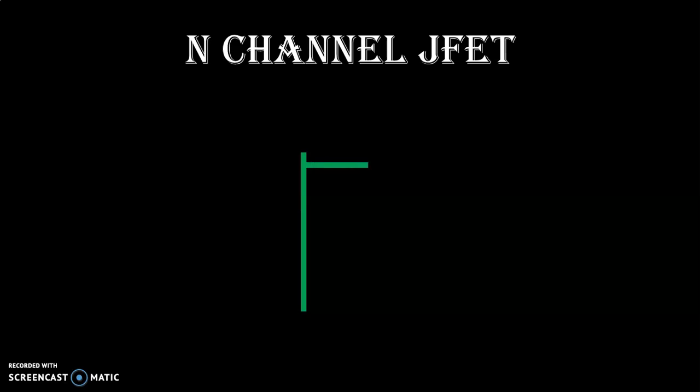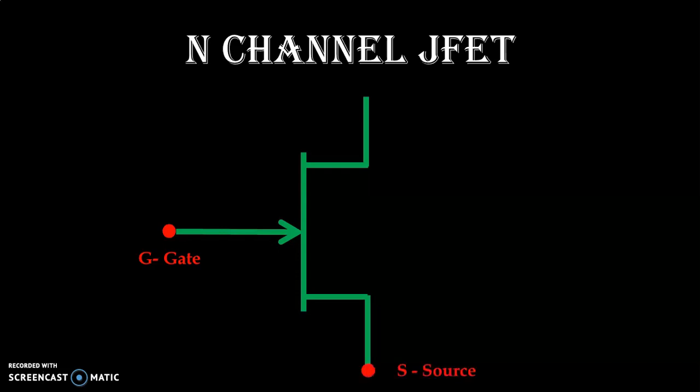N Channel JFET, Junction Field Effect Transistor. You can observe the arrow is going inside. That is why it is N Channel Junction Field Effect Transistor. It has three terminals: Gate, Drain, and Source.